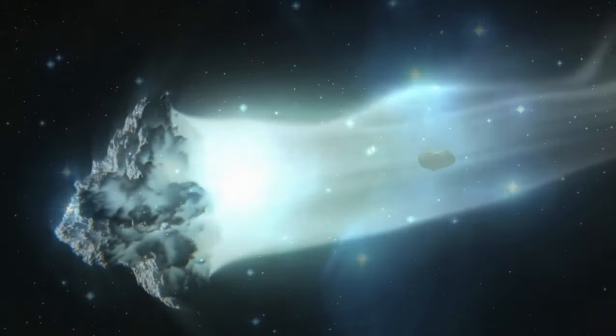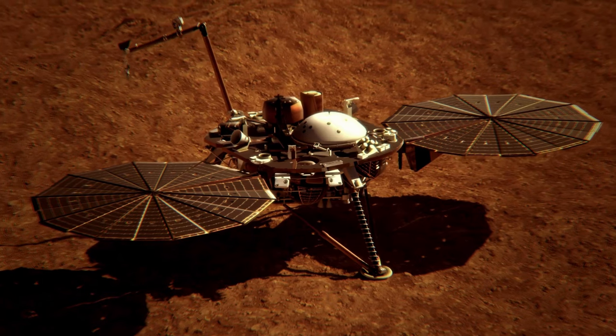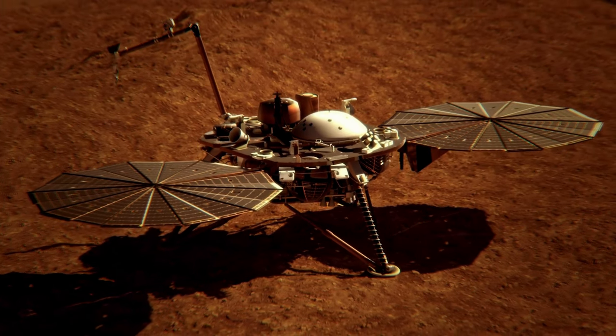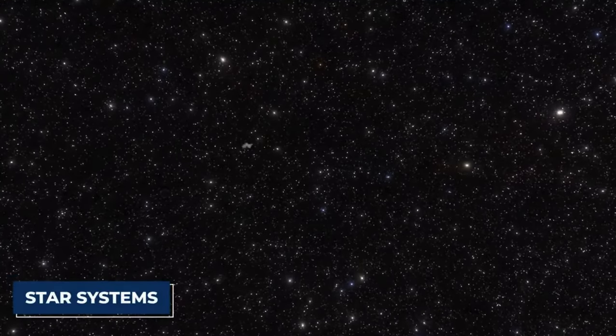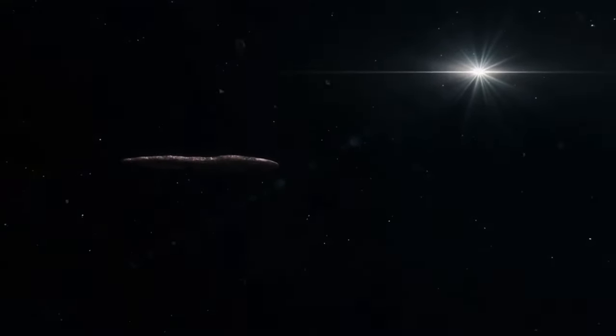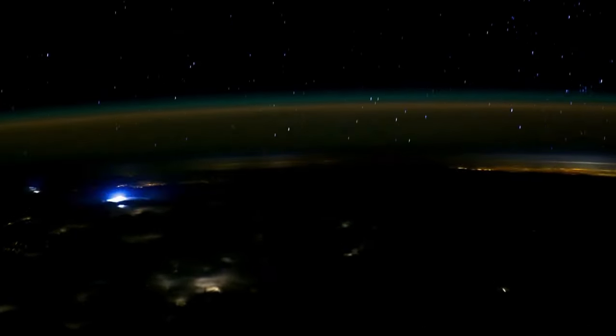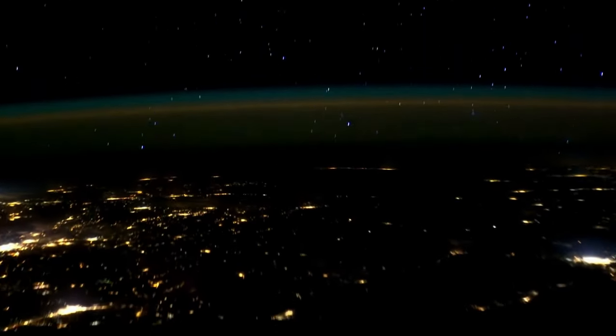The high velocity of Oumuamua has prompted a hypothesis suggesting that it might have originated from a binary star system. This theory proposes that gravitational interactions within such systems can impart high velocities to objects. If Oumuamua did indeed come from a binary system, the gravitational forces from the stars could have propelled it on its interstellar journey, explaining its remarkable speed.